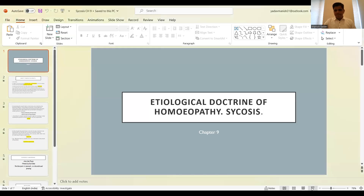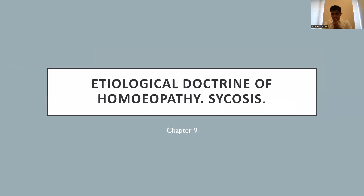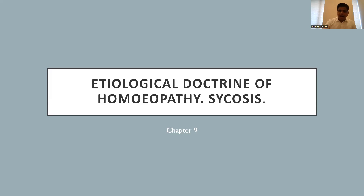Chapter number nine — the headline is 'Etiological Doctrine of Homeopathy: Sycosis.' The entire derivation of miasm is etiological. Etiology is very, very important. Hahnemann talks about this in the Organon — to treat chronic disease, we need to understand the fundamental causes. If you really want to understand the miasm in a case, you have to understand the etiology. The case is of a wart tumor inside the mouth.